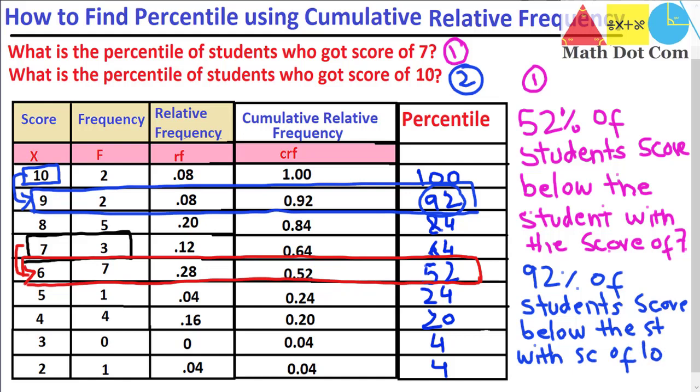You can also verify both these values using the formula I showed in the percentile lecture, but you can only verify the second answer using that formula, because in question 2 we have the rank of the students — they scored the highest marks. Since there are 2 students at the top, the rank is 2, so you subtract 2 from 25 (the total number of students) and divide by 25, and you will get exactly the same percentile. But if you don't have the rank, you cannot use that formula — you should use the frequency distribution table method instead.